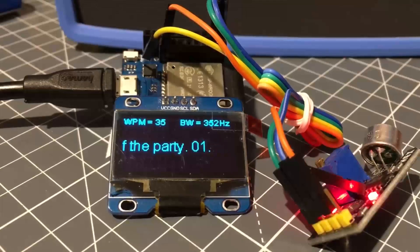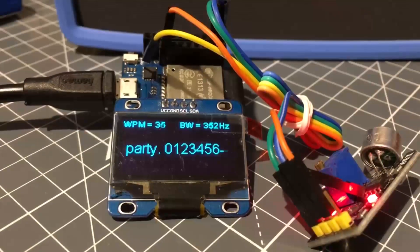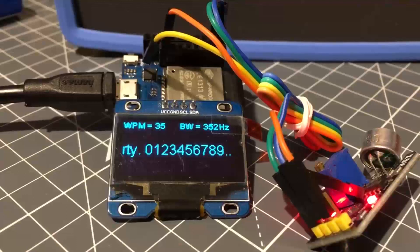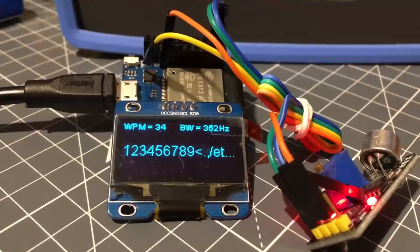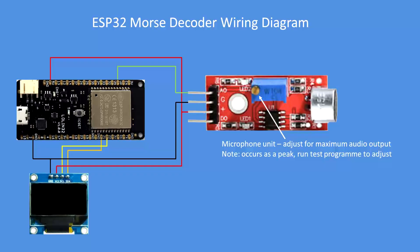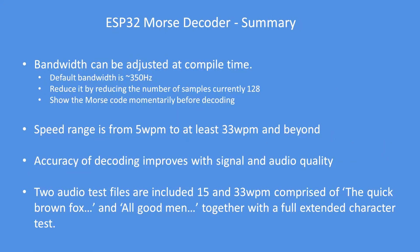You can vary the bandwidth at compile time. The wiring is exactly the same as for the audio spectrum analyser, and it uses one of those really basic microphones — it can be quite a distance from the speaker. The bandwidth can be adjusted; if you reduce the sample size it reduces the bandwidth, but 350 seems about optimal.